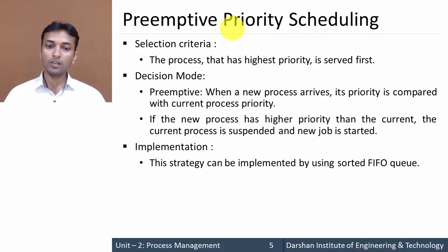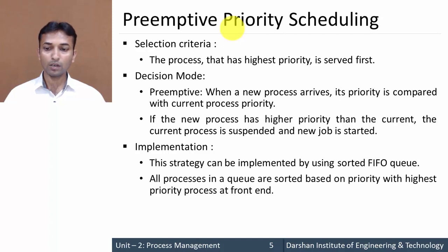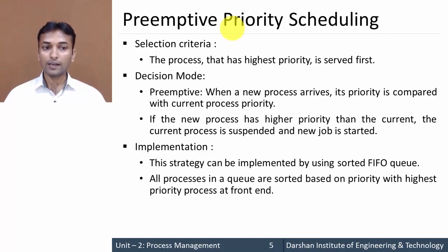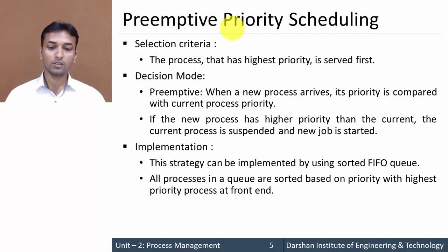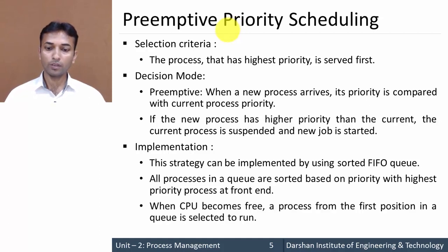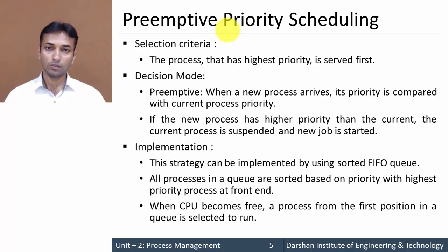For implementation, this strategy is simply implemented by using a FIFO queue, but all the processes in the queue are sorted based on priority, with the highest priority at the front and the lowest priority towards the end. When the CPU becomes free, a process from the first position in the queue is selected to run.